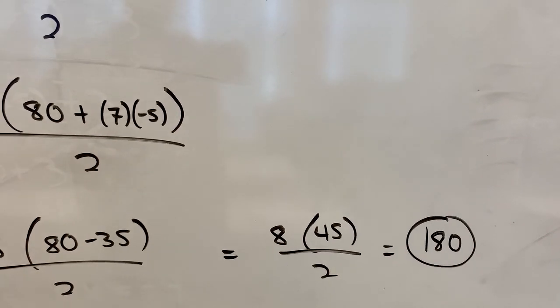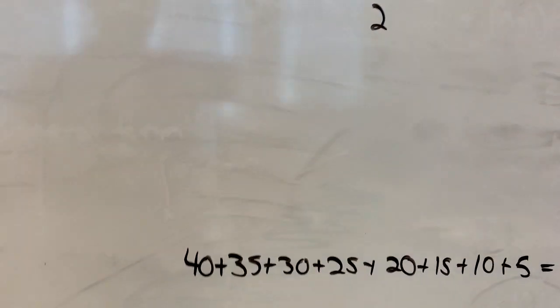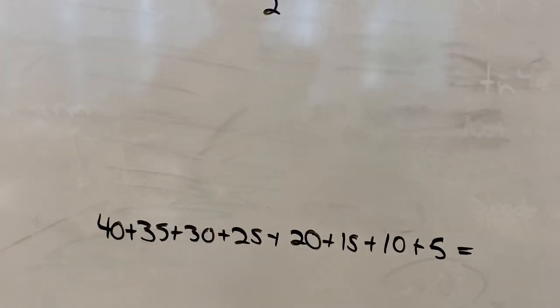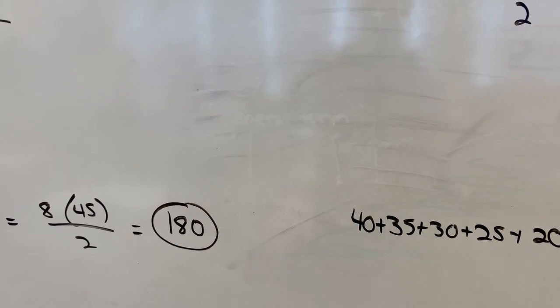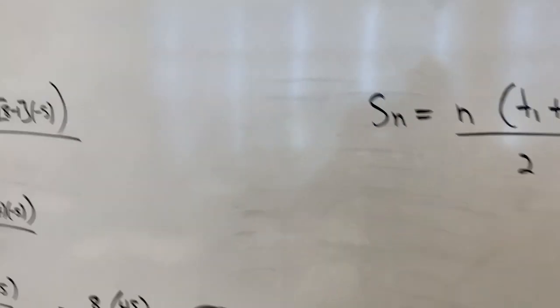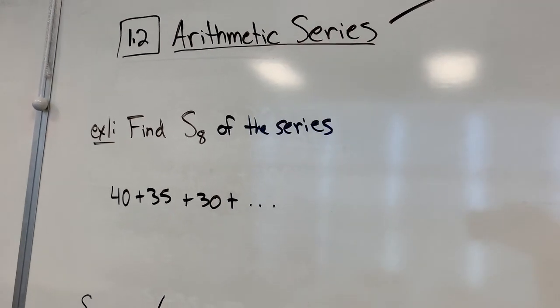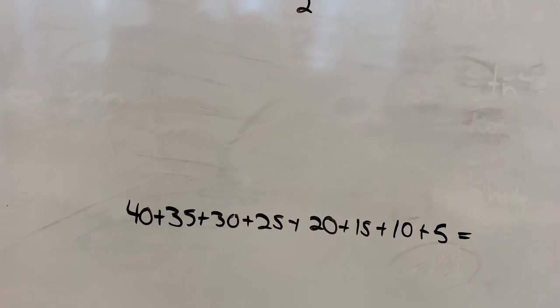Now I could have found the first eight terms. Eight isn't that huge a number. I could have just said, oh well, that's 40 plus 35 plus 30 plus 25 plus 20 plus 15 plus 10 plus 5, and I should get the exact same answer of 180. But as you can imagine, if somebody asked you to find the sum of 180 terms instead of eight terms, adding them all up by hand wouldn't be a reasonable way to solve it.